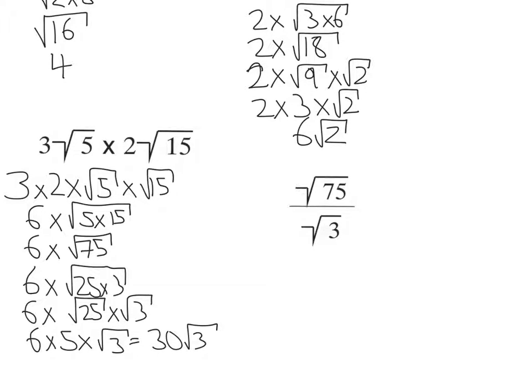Now, last one is dividing. So just like multiplying, if I have two surds dividing, I can make that one big square root with it dividing inside. 75 divided by 3 is 25. Root 25 is 5. And there's my answer.